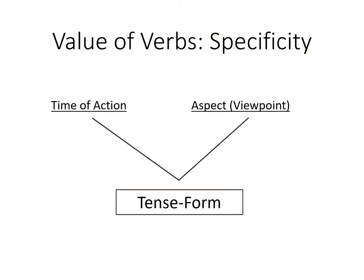Greek verbs have this value of specificity because we have two values that come with every Greek verb. The first is time, and the second is aspect. This one may be new to us, and we'll look at that in a moment, but first, just time.